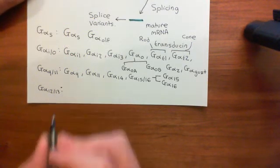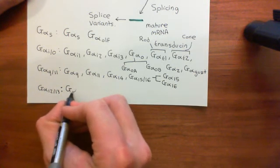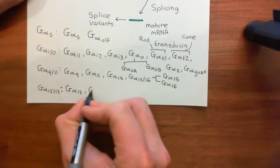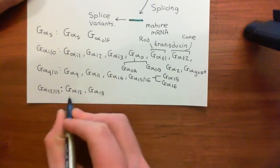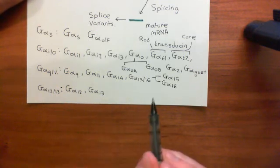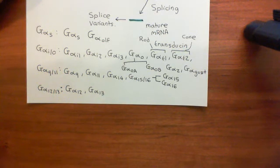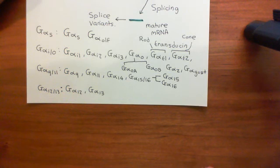Finally, to complete the discussion of alpha subunits: in the Gα-12/13 family you have two members — Gα-12 and Gα-13. These are ones people have generally never heard of; they are involved in cytoskeletal remodelling. In the next video we'll turn our attention to the beta and gamma subunits of heterotrimeric G proteins, and then move on to the G-protein cycle by which G-protein-coupled receptors activate heterotrimeric G proteins.